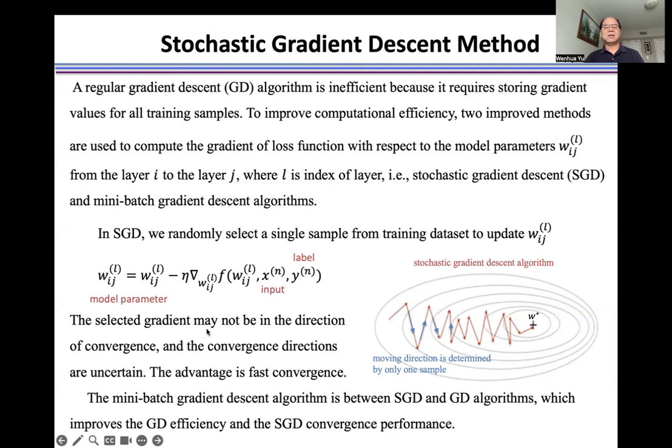The selected gradient may not be in the direction of convergence and the convergence directions are uncertain. The advantage is faster convergence. The mini-batch gradient descent algorithm is between SGD and GD algorithms, which improves GD efficiency and SGD convergence performance.